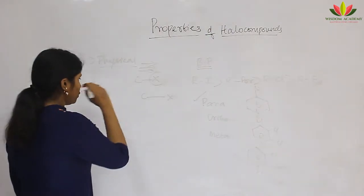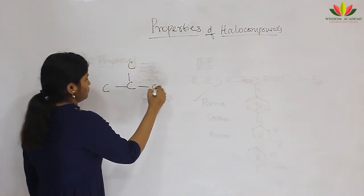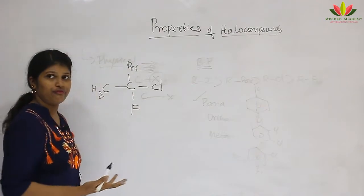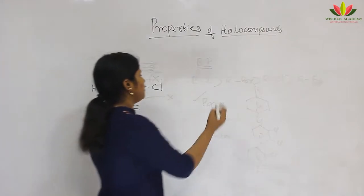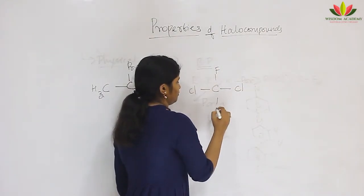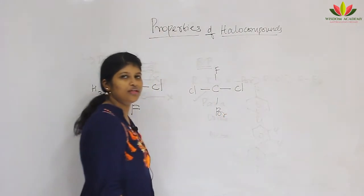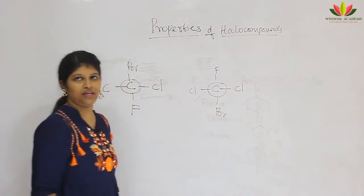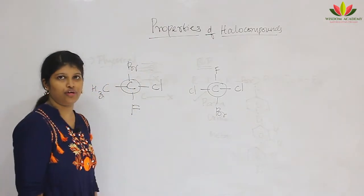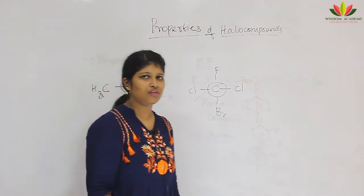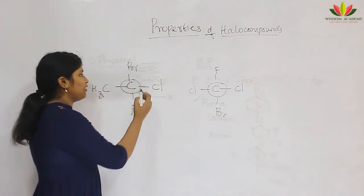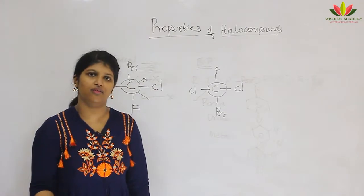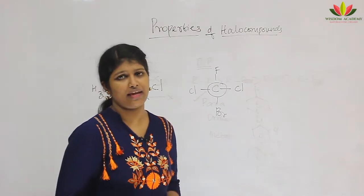First we will start with chirality. Consider a carbon molecule attached with four different groups — for example, methyl, bromine, chlorine, and fluorine. This carbon is chiral. A chiral carbon is one which is attached with four different groups; it is also called an asymmetric carbon. If a carbon is attached with only three different groups (with one repeating), it is not chiral. The phenomenon called chirality is applied to molecules containing such a chiral carbon.